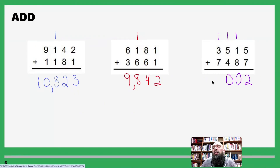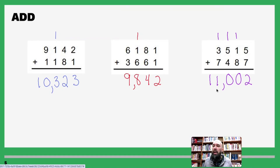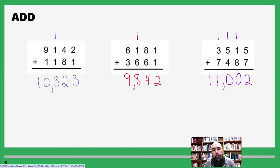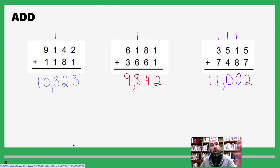Four plus seven is eleven — write down the eleven and put a comma there. Our answer is 11,002. Not so bad, is it?